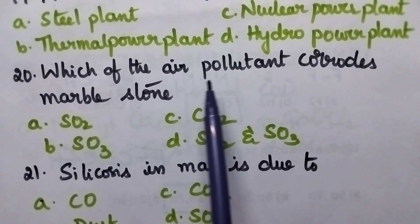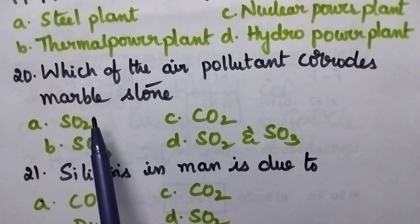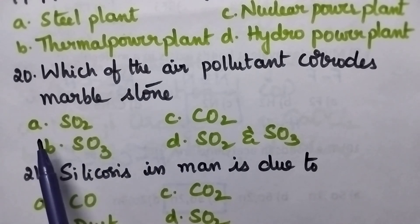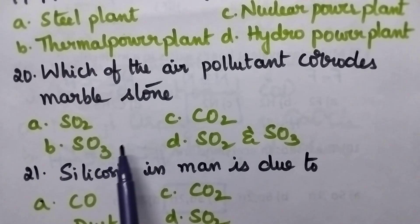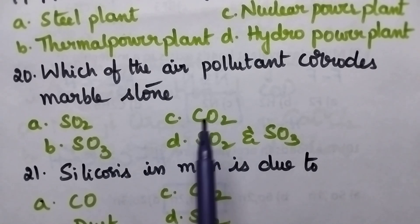Which of the air pollutant corrodes marble stone? A: Sulphur dioxide, B: Sulphur trioxide, C: Carbon dioxide, D: Both sulphur dioxide and sulphur trioxide.